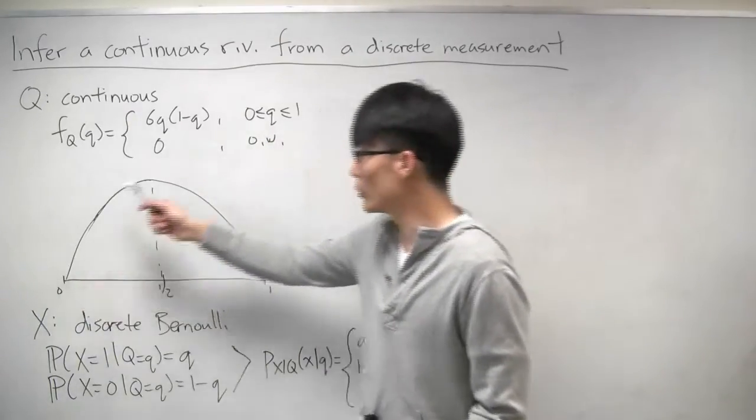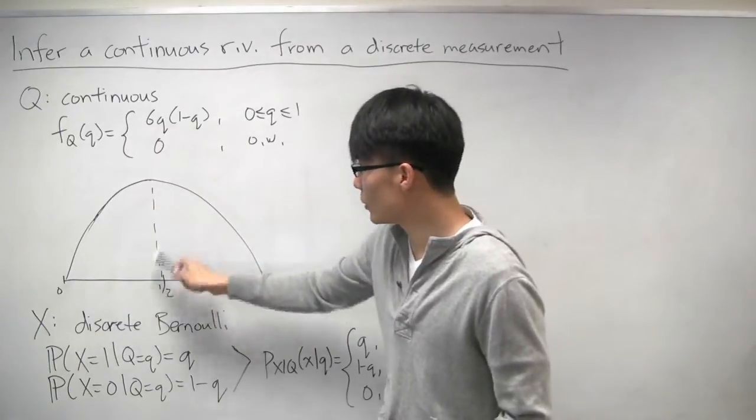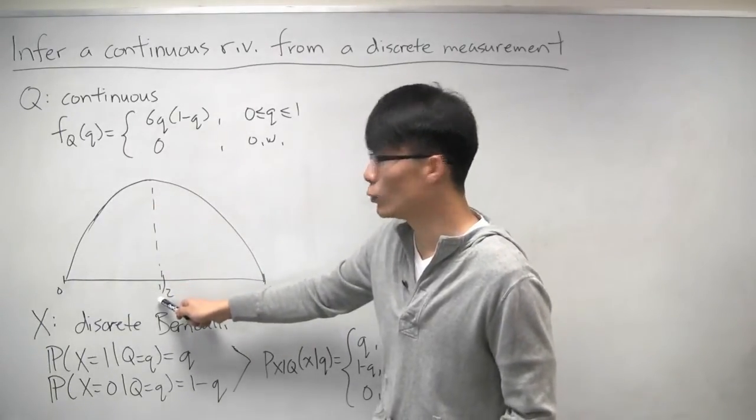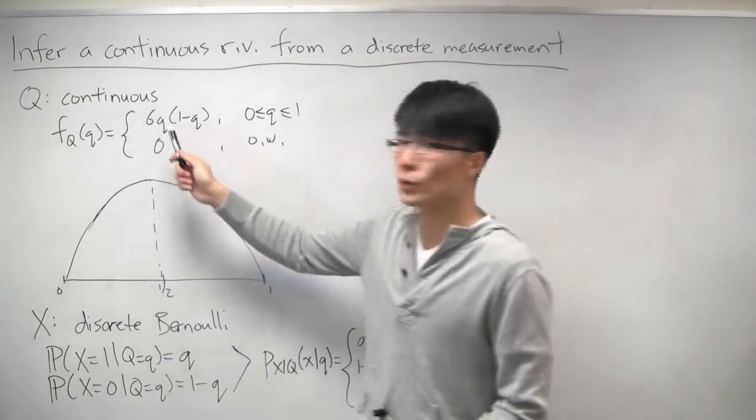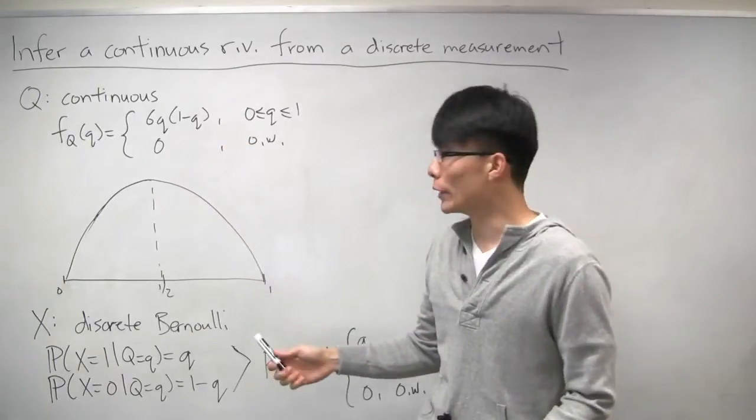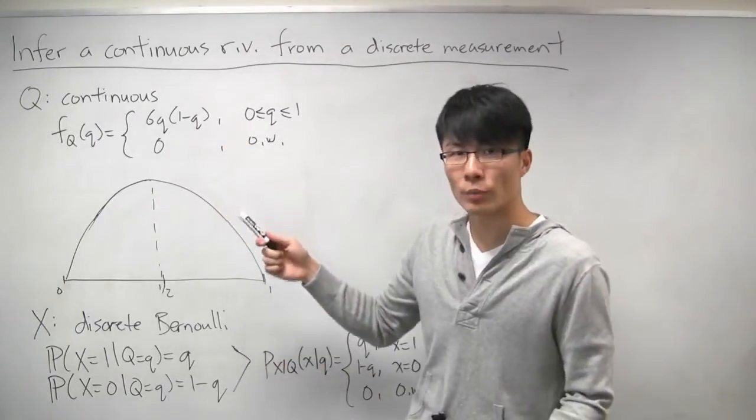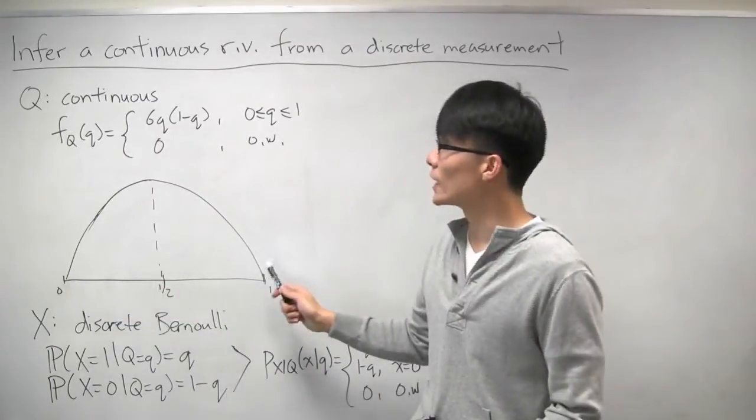It's 6q times 1 minus q for q between 0 and 1, and 0 otherwise. Here's a graph of what it looks like. It has this curved shape, it's symmetric, and its peak is at 1 half. The way to interpret q is that q is the unknown bias of a coin. The bias of the coin, the probability of heads, is somewhere between 0 and 1. We're not sure exactly what it is.